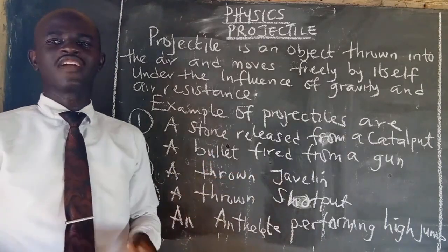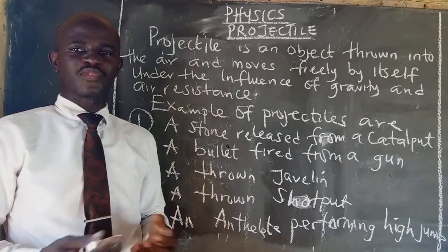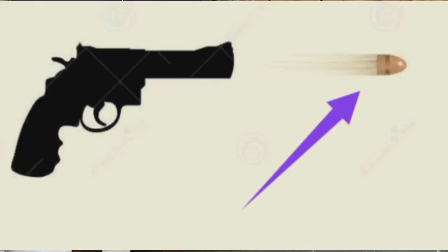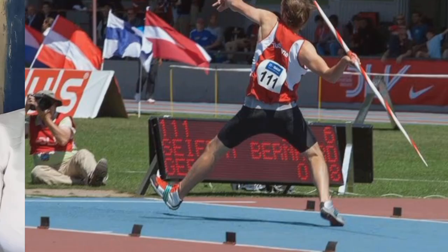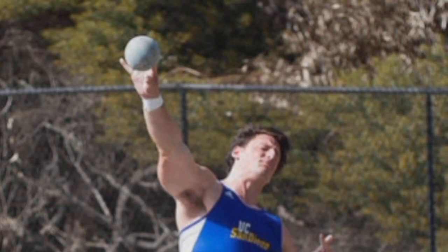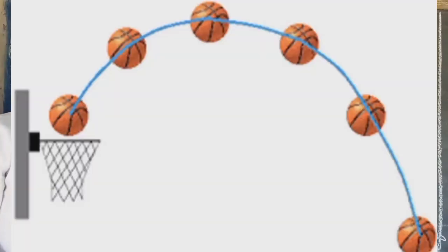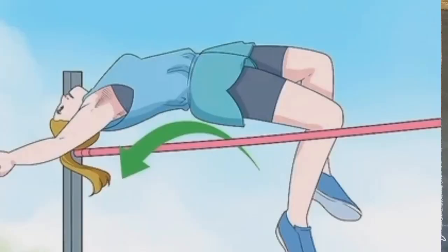We have a few examples of projectile: a stone released from a catapult, a bullet fired from a gun, a thrown javelin, a thrown shot put, a thrown ball, and an athlete performing a high jump.